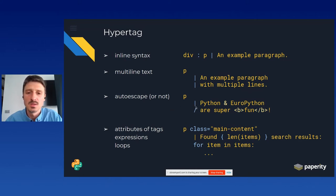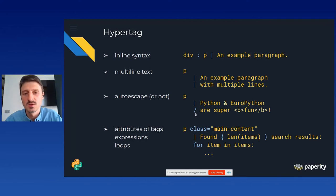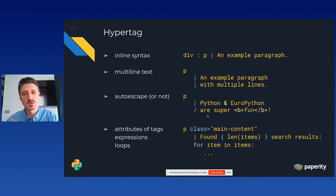There are three types of text blocks. A plain text block starts with a vertical bar and is automatically HTML-escaped. If you want to embed raw HTML inside your text, you can use a slash at the beginning of the text block instead, which signifies a raw HTML text block. There's also a third type — a verbatim block — which avoids evaluation of expressions.